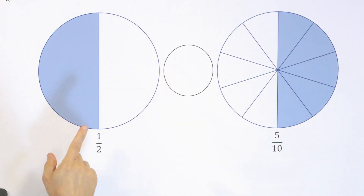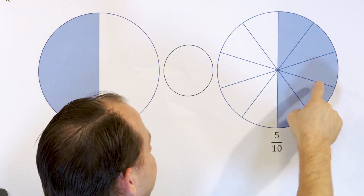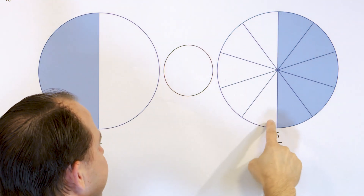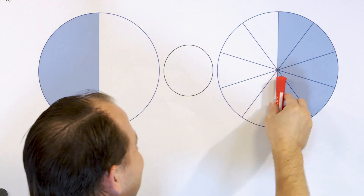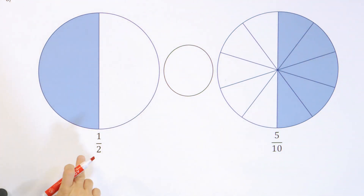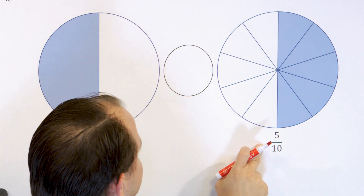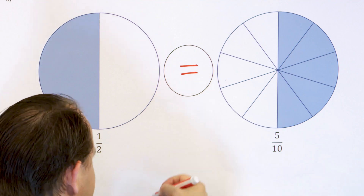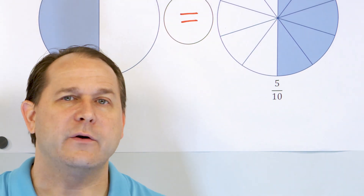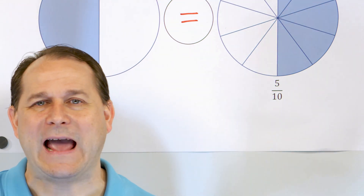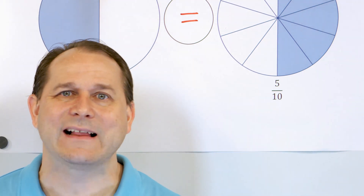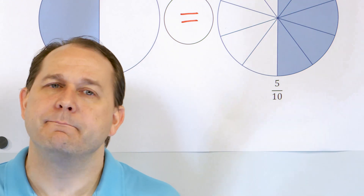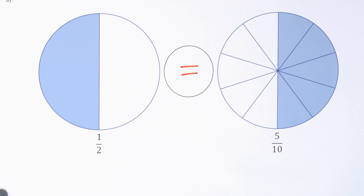Our next problem compares one half — one out of two pieces — to five tenths — five out of ten. Which one is bigger? Actually, when you look at the shaded amount, it's exactly the same in both cases. So even though one half looks completely different from five tenths, they represent exactly the same amount. Five out of ten pieces is exactly the same as one out of two pieces — in both cases you're getting half the pizza.